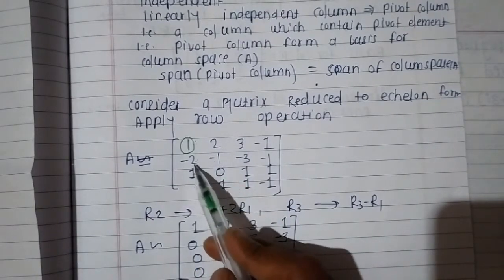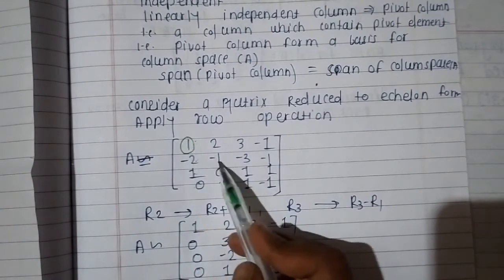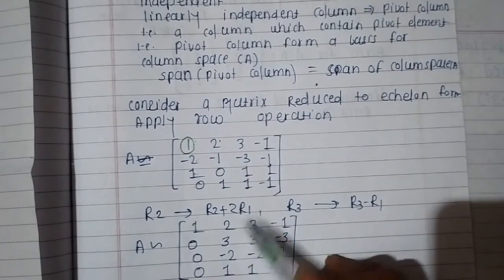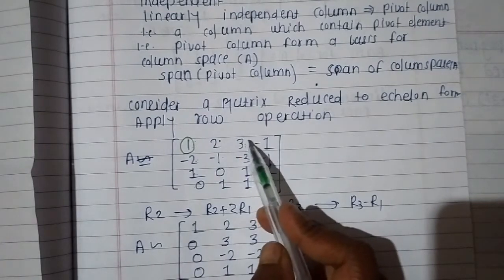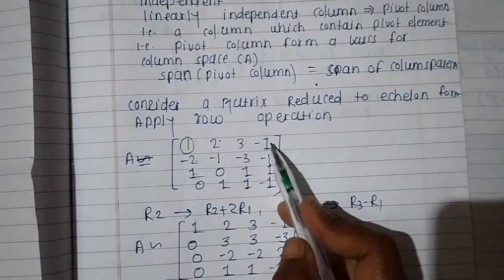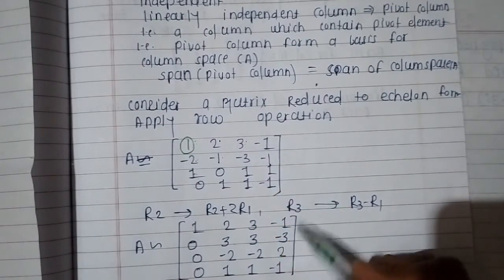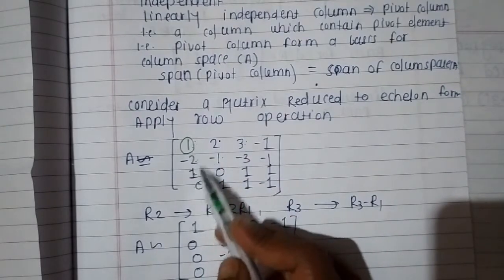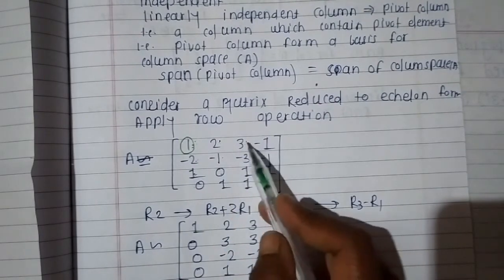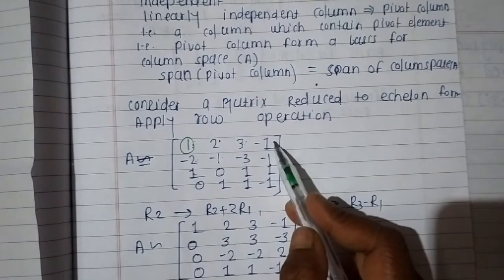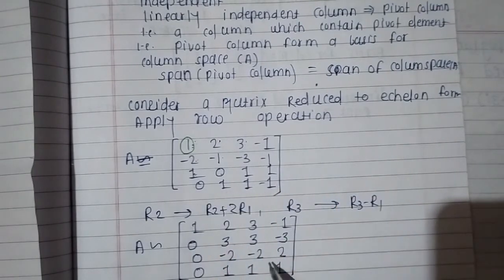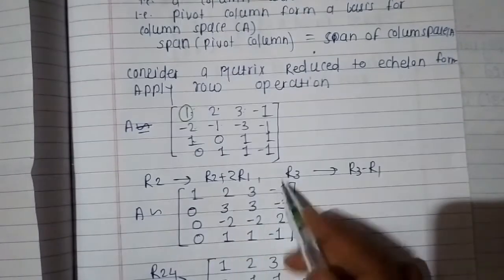The first row remains as it is. For the second row: minus 2 plus 2 is 0; minus 1 plus 2 times 2 gives 4 minus 1 equals 3; minus 3 plus 6 is plus 3; then minus 1. For R3 minus R1: 1 minus 1 is 0; 0 minus 2 is minus 2; 1 minus 3 is minus 2; 1 plus 1 is 2. The last row remains as it is.